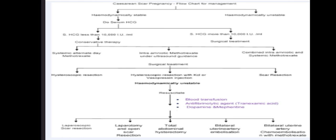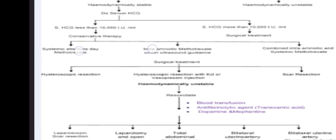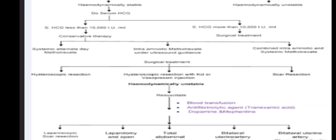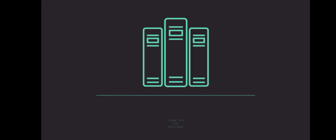We will choose the management plan accordingly — either conservative or surgical. Conservative management is chosen only in a hemodynamically stable patient. If the patient is hemodynamically unstable, we must move towards laparoscopic scar resection, laparotomy with open scar resection and hemostasis, or hysterectomy. This was all about Caesarean Ectopic Pregnancy. Although it is a very rare form of ectopic pregnancy, it is associated with increased morbidity and mortality. Thank you.